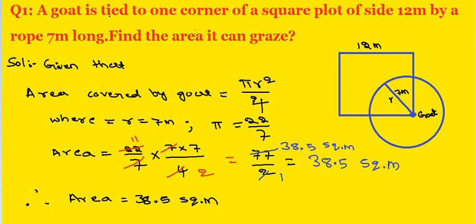A goat is tied to one corner of a square plot of side 12 meters by a rope 7 meters long. Find the area it can graze. Given: square side 12 meters, rope length r equals 7 meters. Area covered by goat equals pi r squared by 4. We divide by 4 because the rope is tied at the corner of the plot and only 1/4th part the goat can graze. Area equals 22 by 7 into 7 into 7 by 4. Here 7 and 7 cancel, 4 to 2, 22 to 11. So 11 into 7 by 2 equals 38.5. Area equals 38.5 square meters.